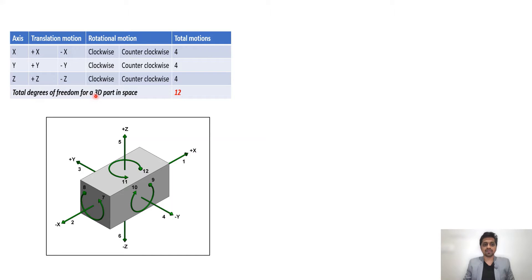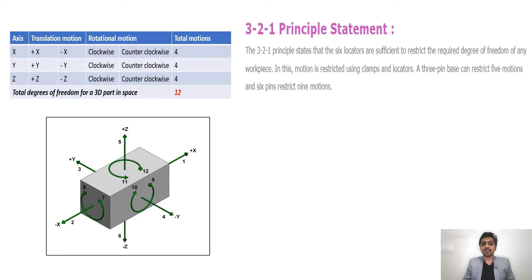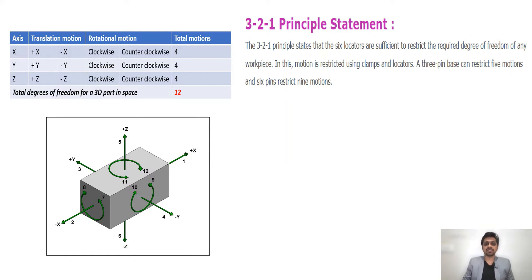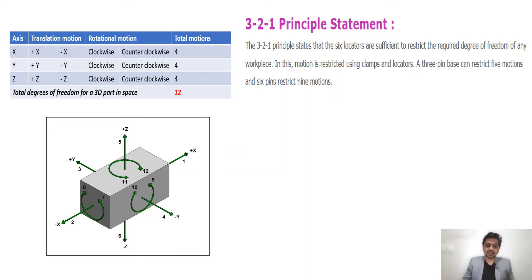A 3D part in space has a total of 12 degrees of freedom. Now let's see what the 3-2-1 principle is, which is an important principle in locating a part. The 3-2-1 principle states that six locators are sufficient to restrict the required degrees of freedom of any workpiece. Motion is restricted using clamps and locators — a 3-pin base can restrict 5 motions, and 6 pins can restrict 9 motions.